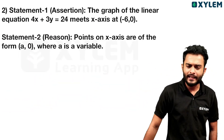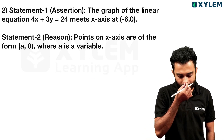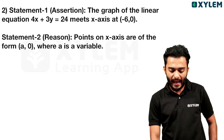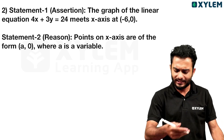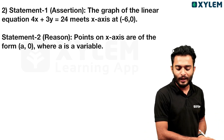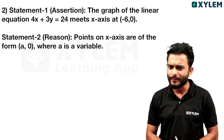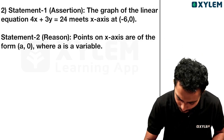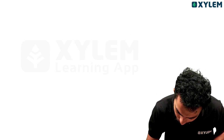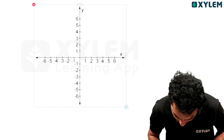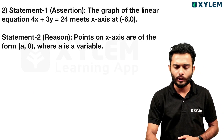Statement 1, second question, Statement 1: The graph of the linear equation 4x + 3y = 24 meets the x-axis at (-6, 0). Statement 2: Points on the x-axis are of the form (a, 0) where a is a variable.